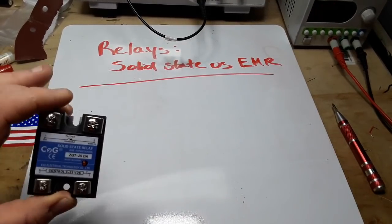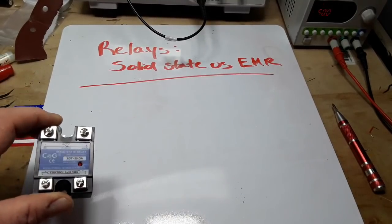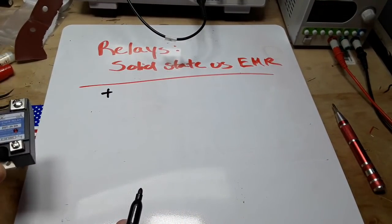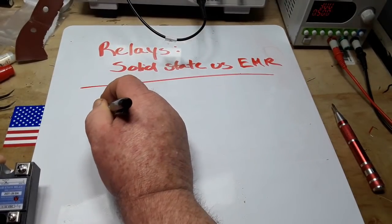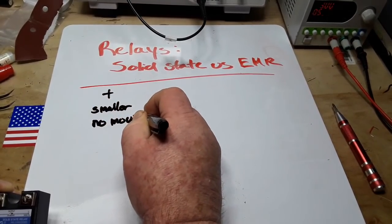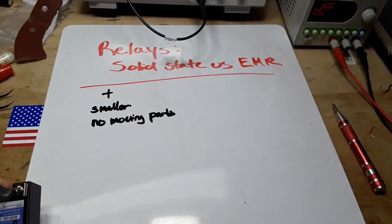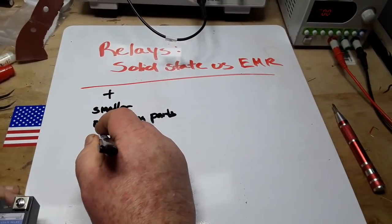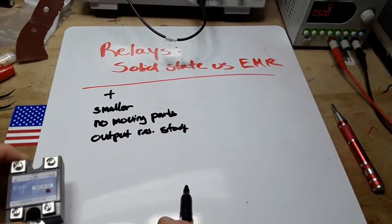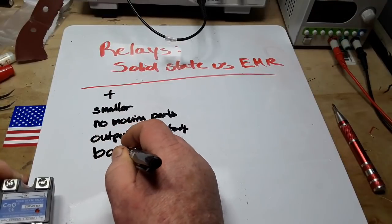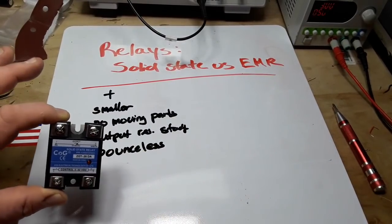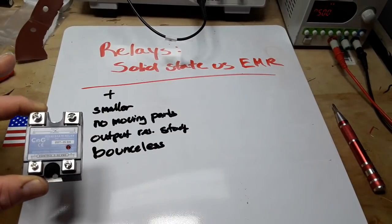So what are some advantages and disadvantages of the solid state relay over the electromechanical relay? Well, on the plus side, the solid state relay, the SSR is generally smaller. It has no moving parts, so it lasts longer. Its output resistance is steady regardless of the load, and they are bounceless. There's no springy bar making contact that can bounce. It's solid state. There's nothing that can go bad there.